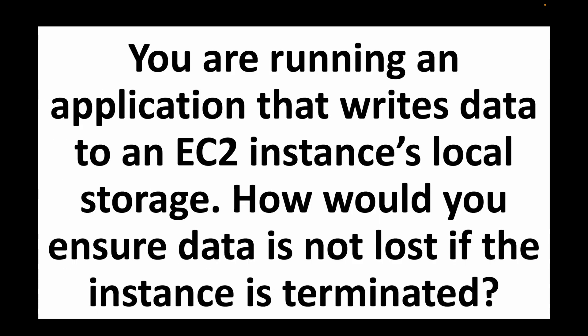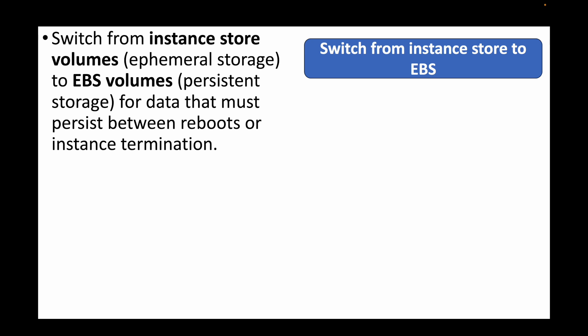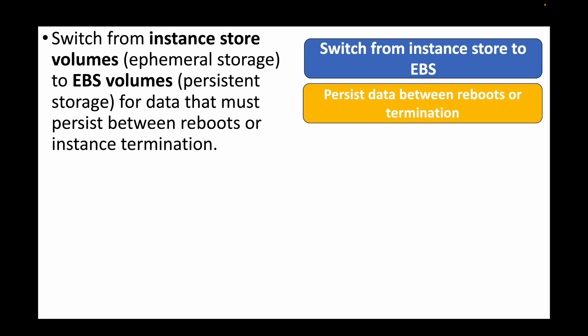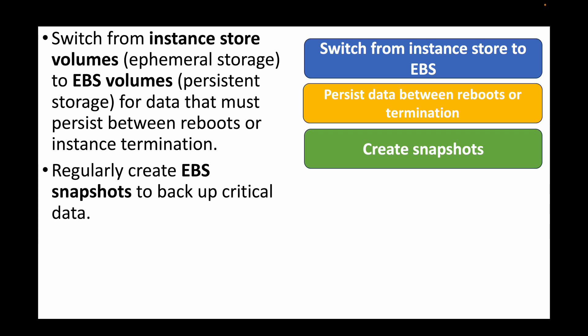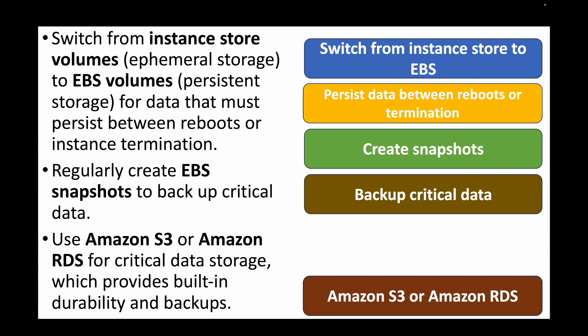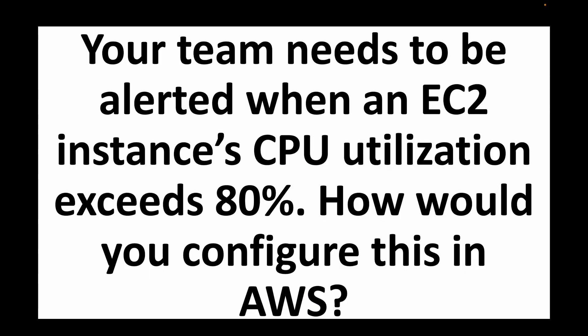The next question: you're running an application that writes data to an EC2 instance's local storage — how would you ensure data is not lost if the instance is terminated? We will make use of EBS volumes. If you are using instance store, you will need to switch to EBS volumes, which make data persistent and independent of the EC2 instance lifecycle — so even if you terminate or stop the instance, the data is preserved. We can also take regular backups of EBS volumes and use S3 buckets or Amazon RDS for critical data storage, which provides built-in durability and backups.